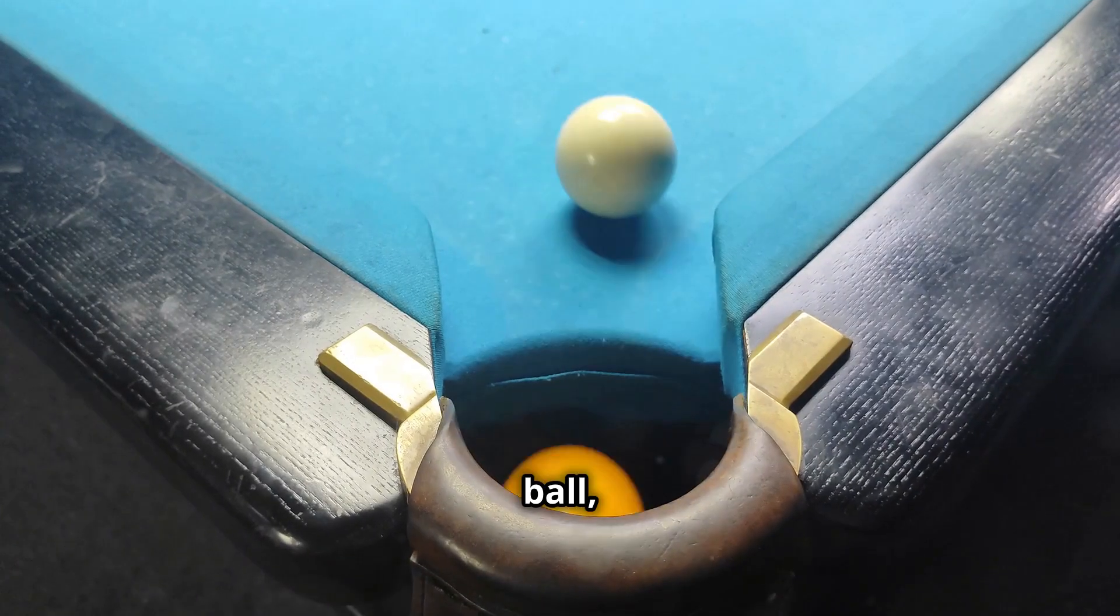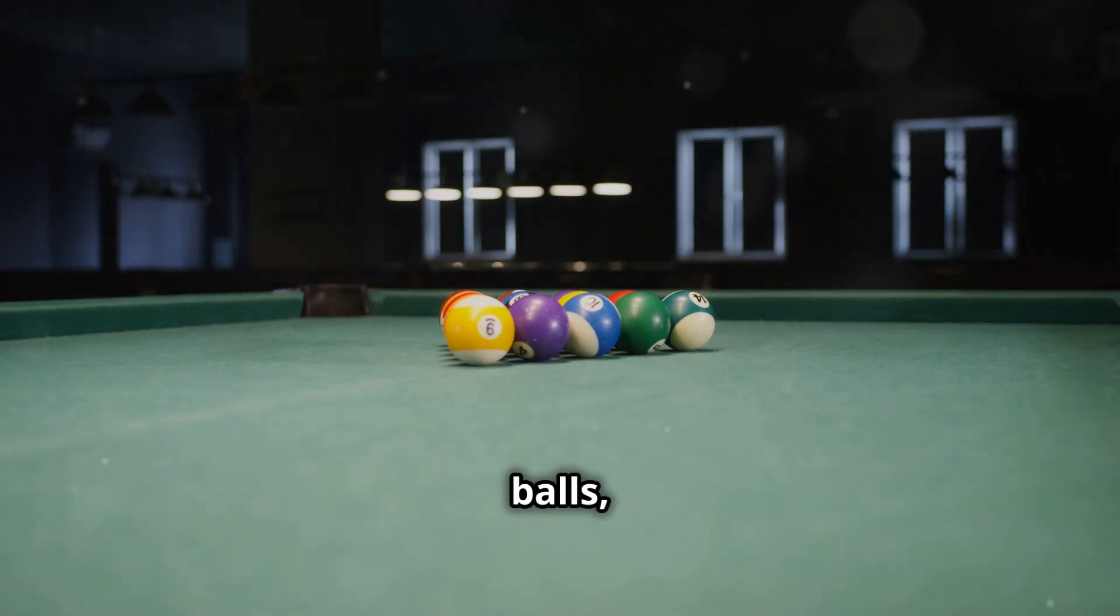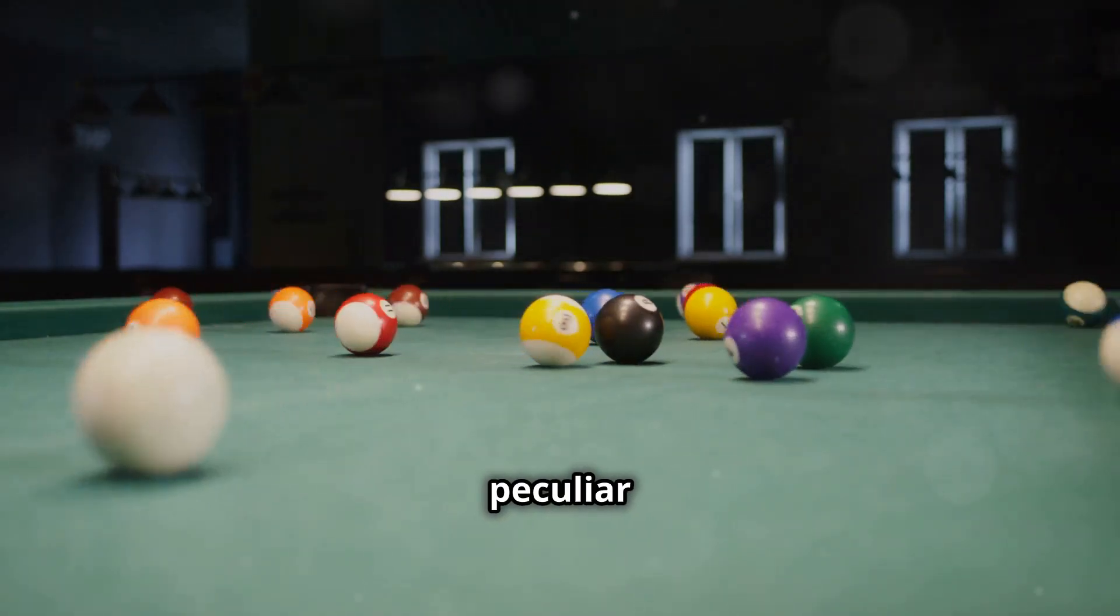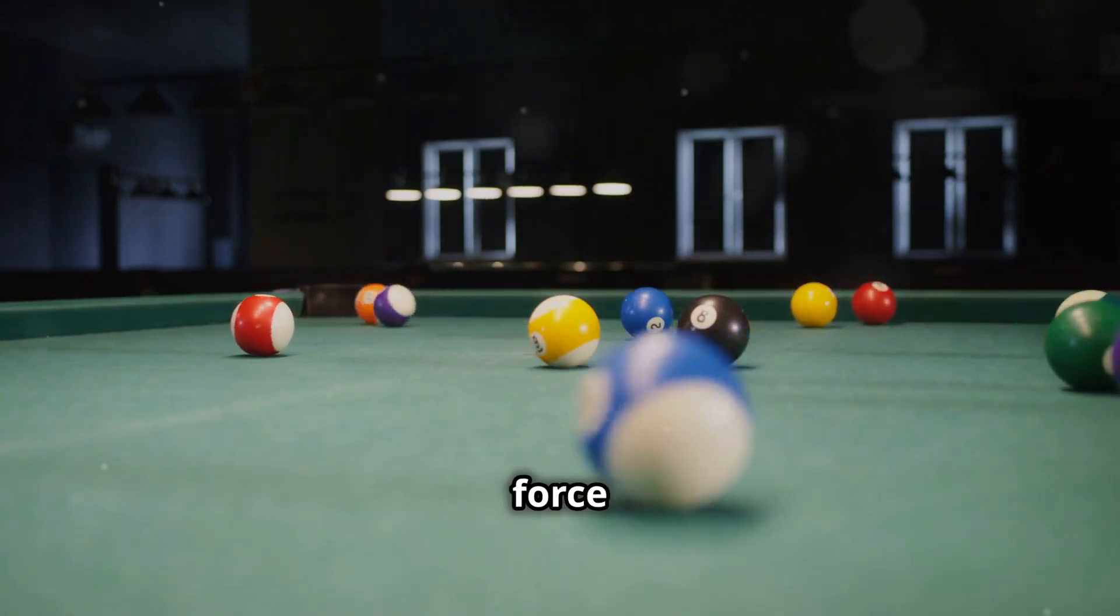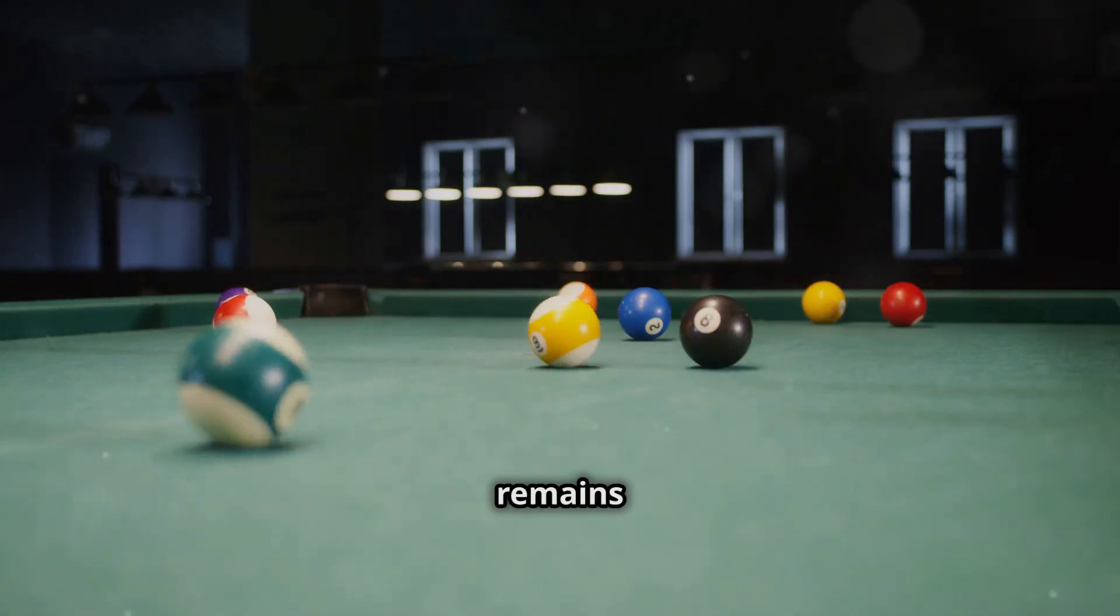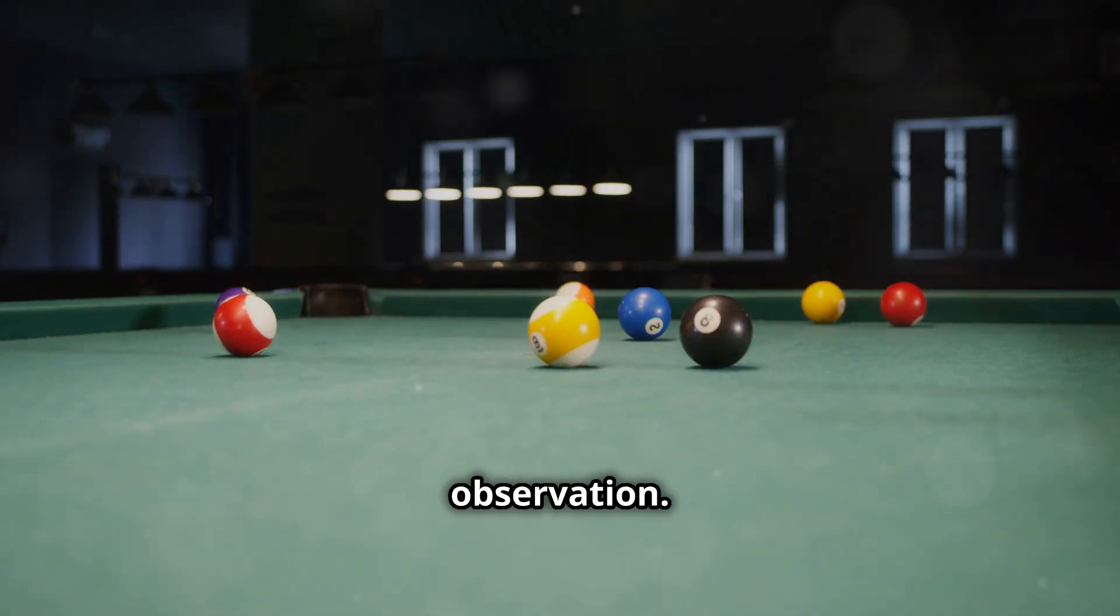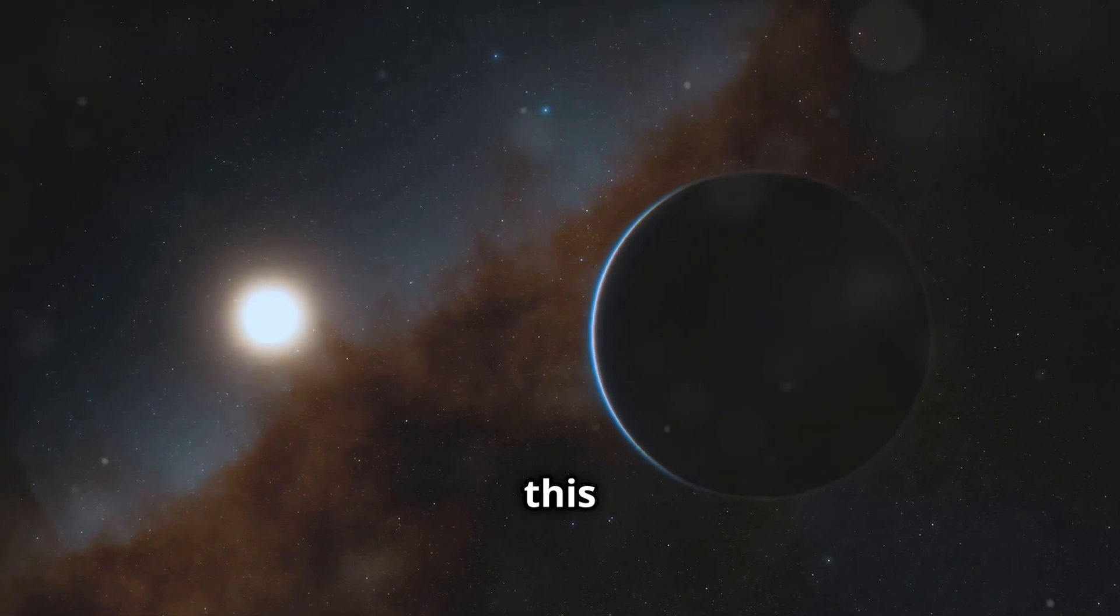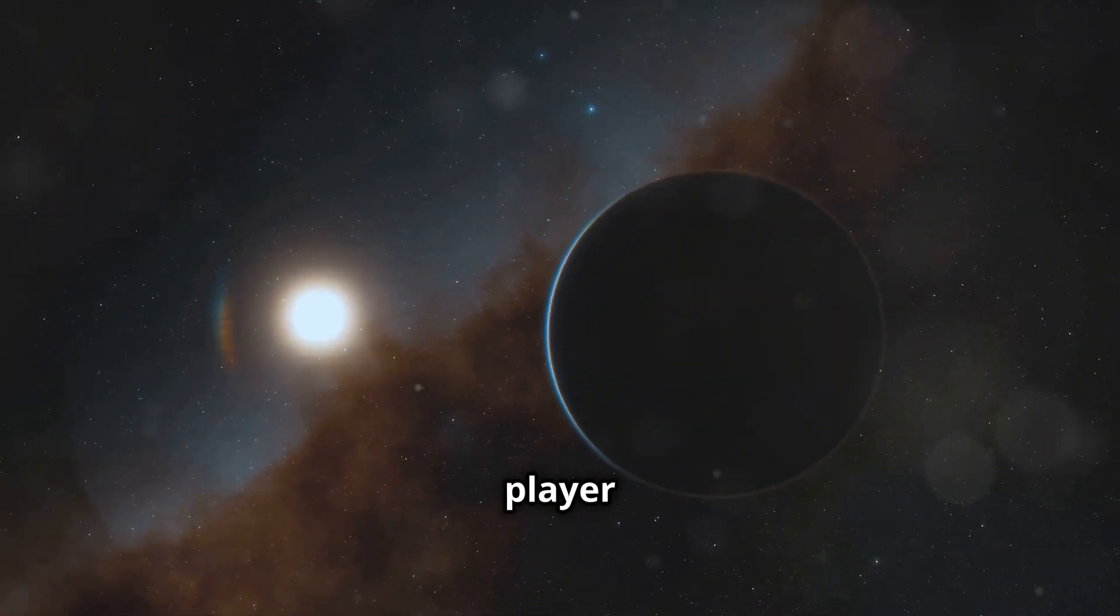The cue ball, representing an unknown force, has scattered the billiard balls, or TNOs, into peculiar positions. This unseen force is powerful enough to alter the orbits of these distant objects, yet it remains hidden from our direct observation. The only way to explain this scattering is if there's a hidden player on the table, Planet Nine.